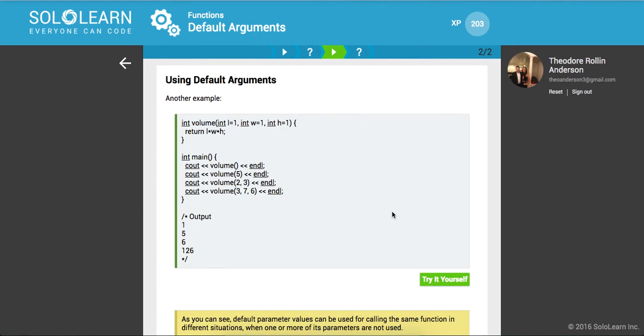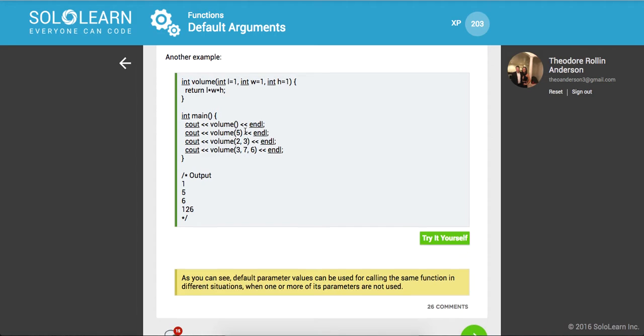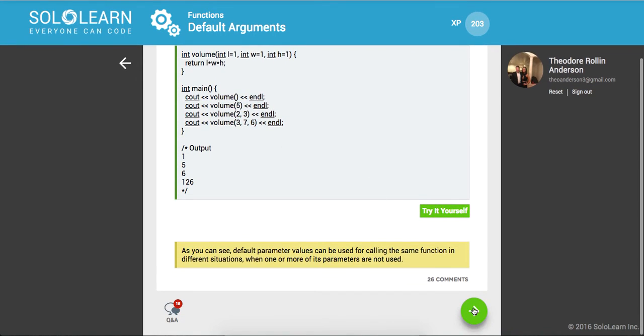All right. And using default arguments, so here again, we're setting these all equal to 1 as our default. And as you can see, default parameters can be used for calling the same function in different situations when one or more parameters are not used. So it's just incorporating that layer of validation.